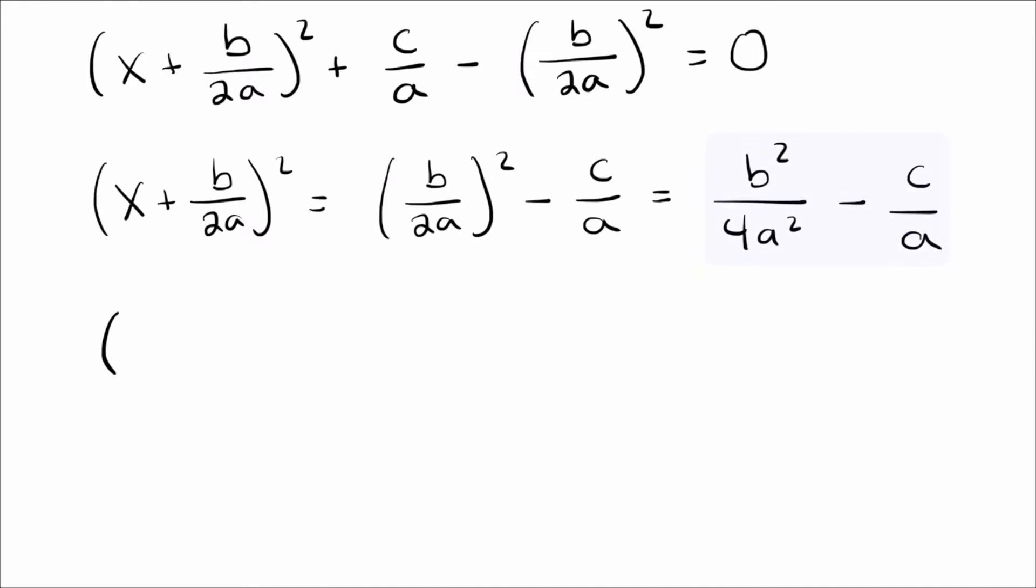Now, on the right, I can add those two up if I get common denominators. So the common denominator certainly is going to be 4a². So this one needs a 4a on the top and on the bottom. So if we do that, the first one's got b², the next one has 4ac. So this should already be starting to look a little bit familiar.